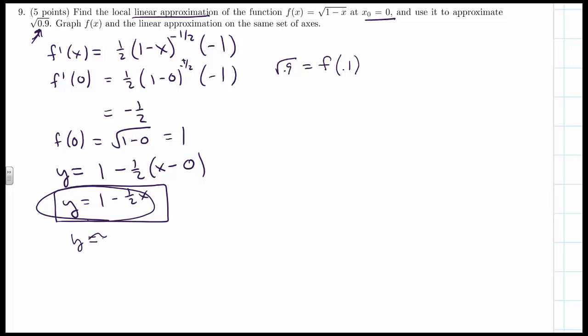F(0.1) is approximately 1 minus one-half times 0.1, which is 1 minus one-half times one-tenth, 1 minus one-twentieth, which is 19 twentieths, or 0.95. There's our approximation.